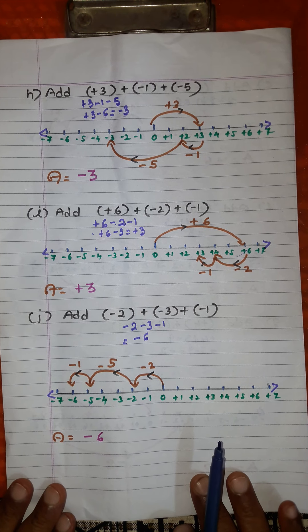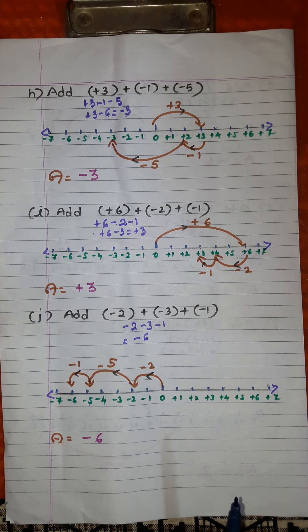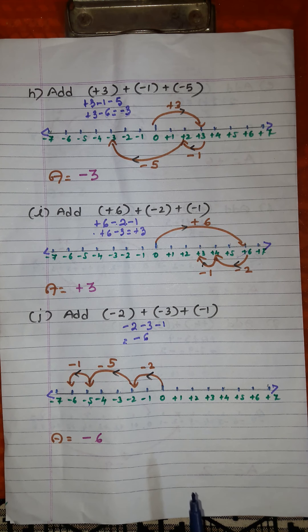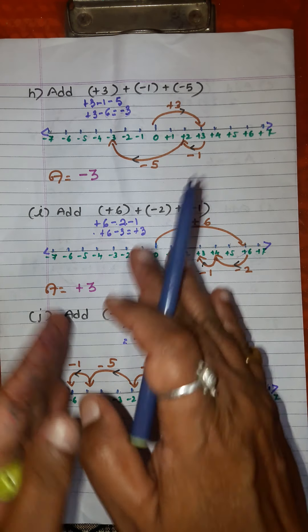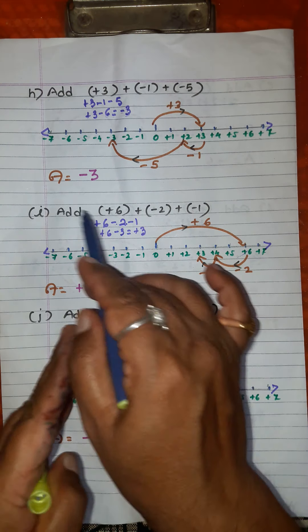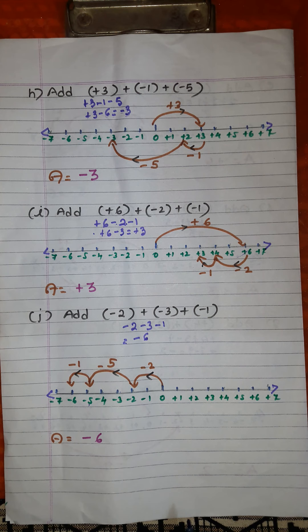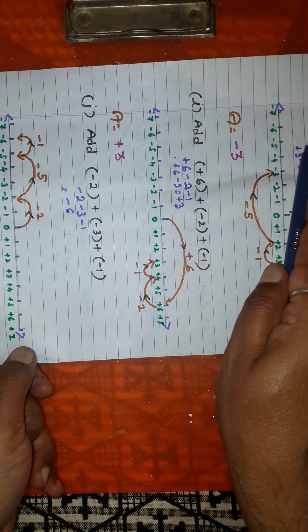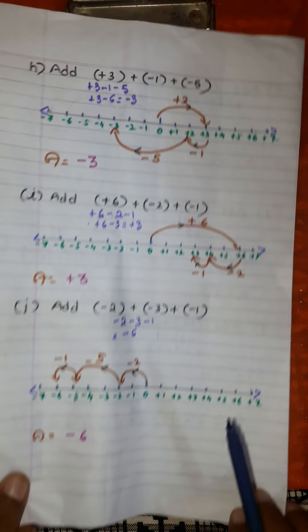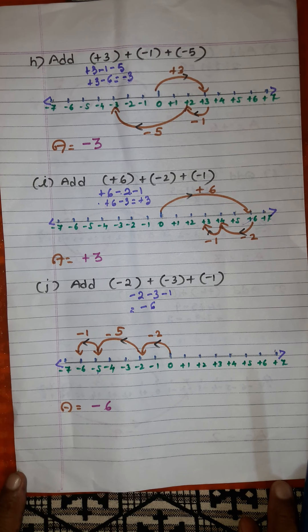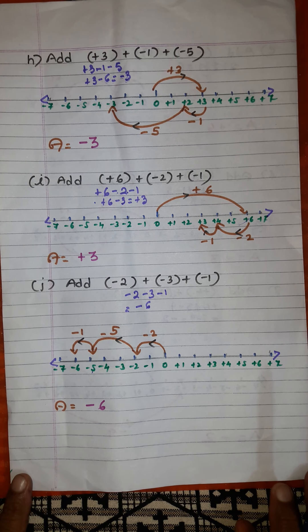In the beginning I already told you: if you find difficulty adding using a number line because the value of the numbers is more — for example plus 15, plus 14, plus 13 — then keep the sheet horizontally and draw a longer line with more divisions. You can show those numbers on the number line. I think you will not find any difficulty in understanding how to add integers by making use of number lines.